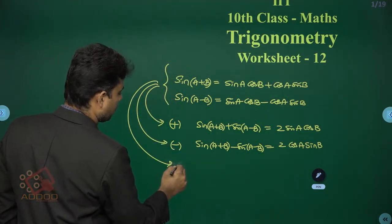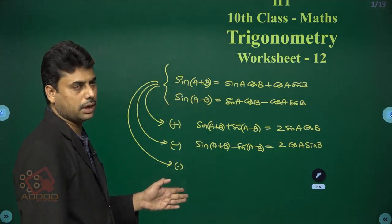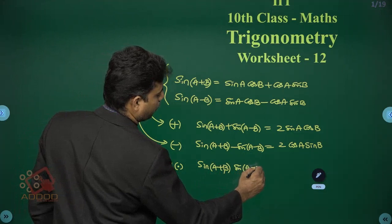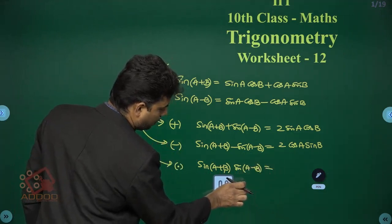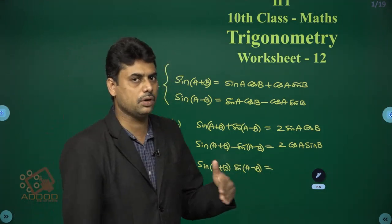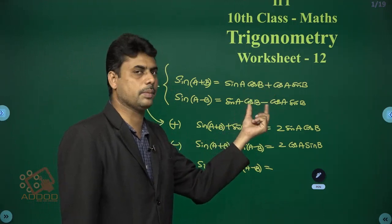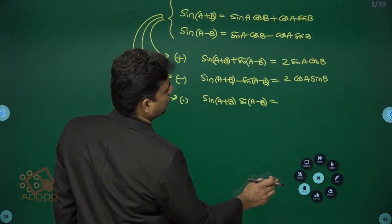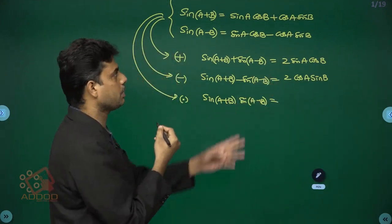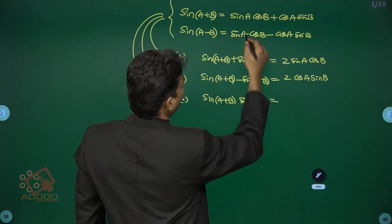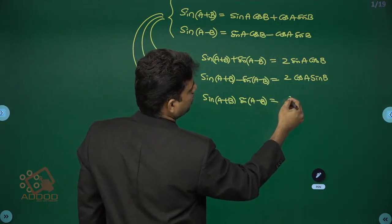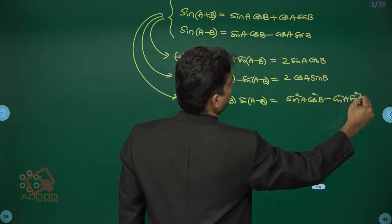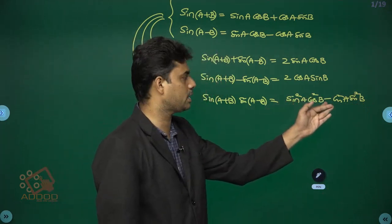The product sin(a+b)·sin(a-b) is in the form (a+b)(a-b) = a²-b², so it equals sin²a·cos²b - cos²a·sin²b. Simplifying using cos²b = 1 - sin²b and cos²a = 1 - sin²a, the cross terms cancel, giving sin²a - sin²b.